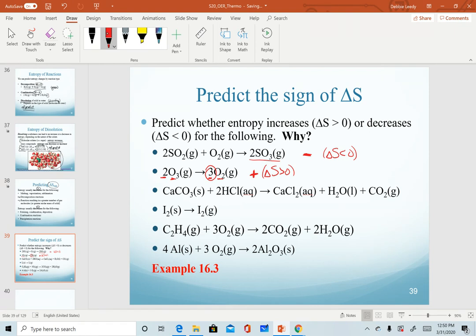In our third example, we look at our physical states. Notice we start with solid and aqueous as our reactants, and going to aqueous, liquid, and gas. So just looking at our physical states, we're going from very ordered reactants to very disordered products. And so we would predict a positive change for this one.